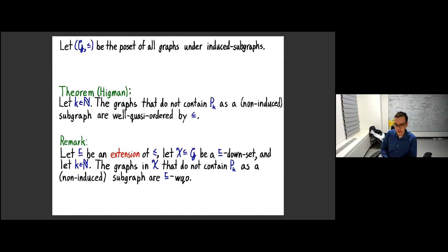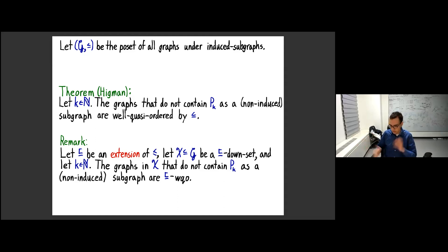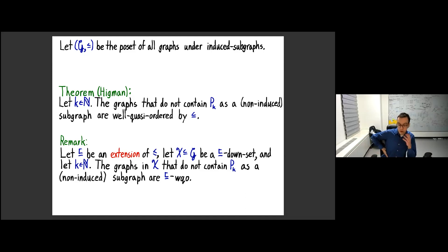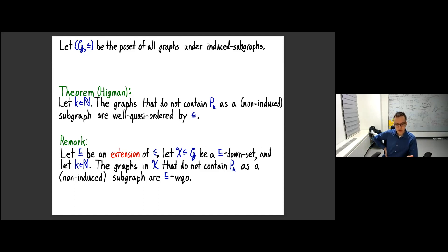This means that for any extension of the induced subgraph ordering — whether we add edge deletion, edge contraction adjacent to a degree-two vertex, or other operations — if we don't contain a long path, then graphs are still well-quasi-ordered in this extension. So to not be well-quasi-ordered, you need long paths. As a sort of converse of Robertson-Seymour: if we look at the subset of graphs of bounded treewidth, and graphs of bounded pathwidth, and focus on quasi-ordering within these classes, are these related? Is there a function giving well-quasi-ordering in bounded treewidth that just requires looking at a certain amount of pathwidth?